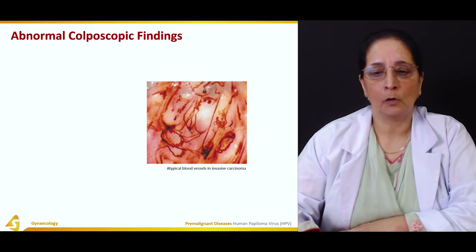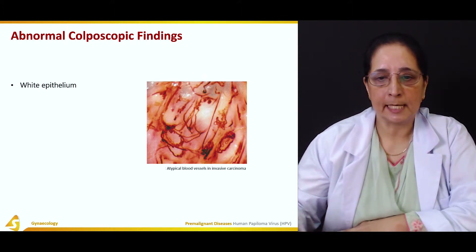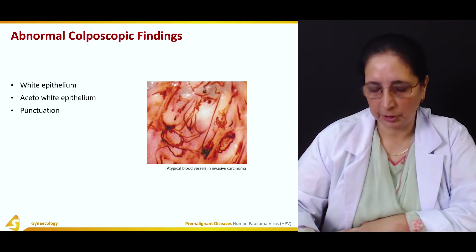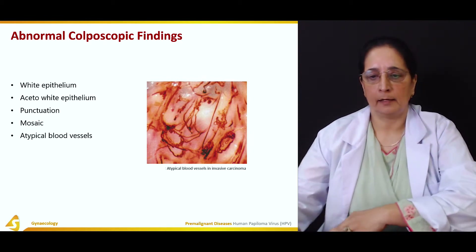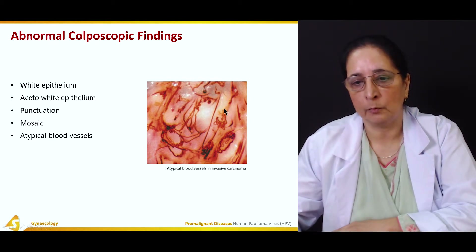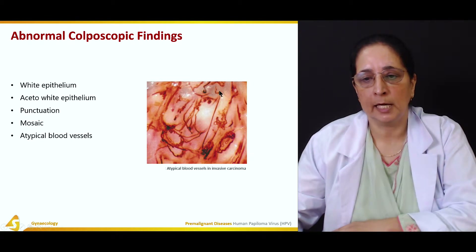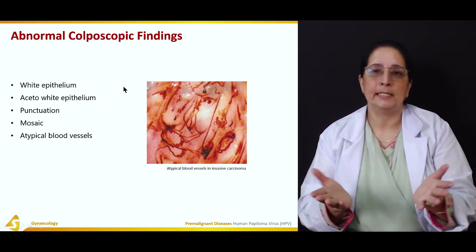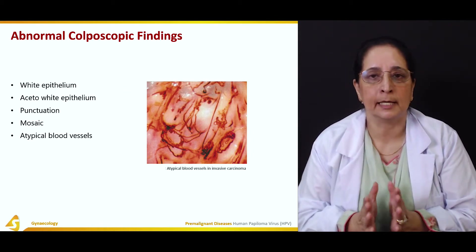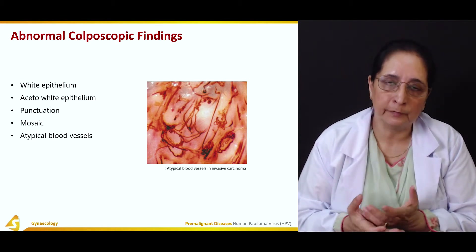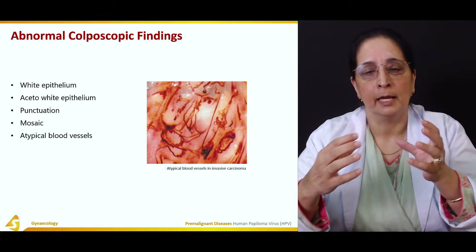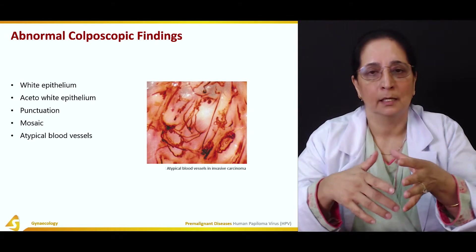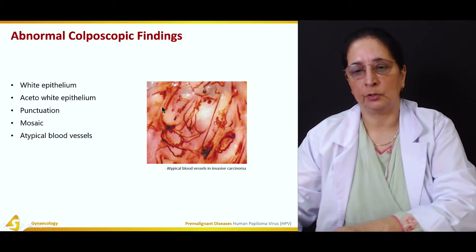Abnormal colposcopy findings typically include aceto-white epithelium, punctuation changes, mosaic pattern changes, and atypical blood vessels. Atypical blood vessels are present in invasive cancer. The mosaic pattern is created by joining different pieces, like pieces of marble or glass. These atypical blood vessels are shown in the diagram.